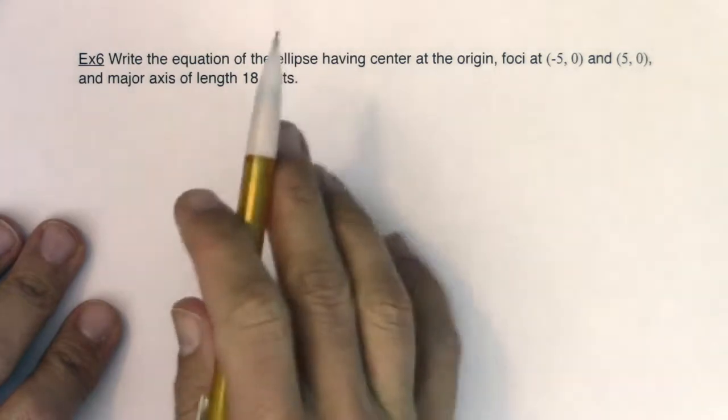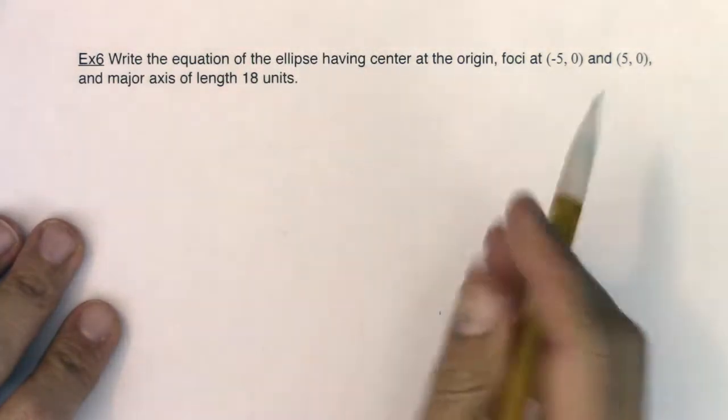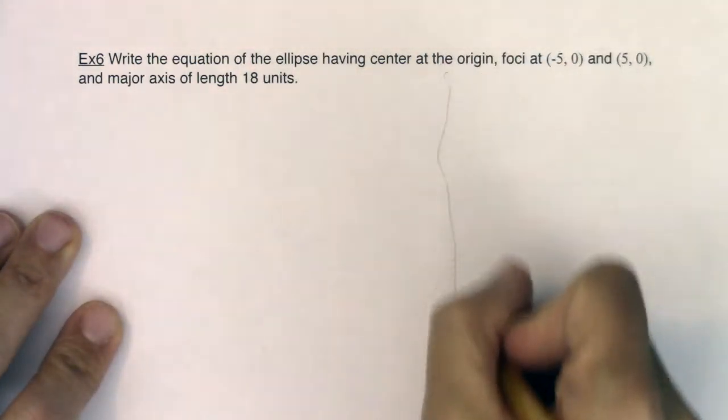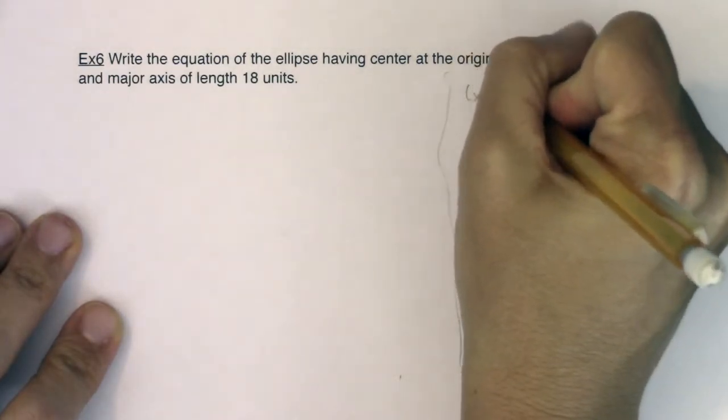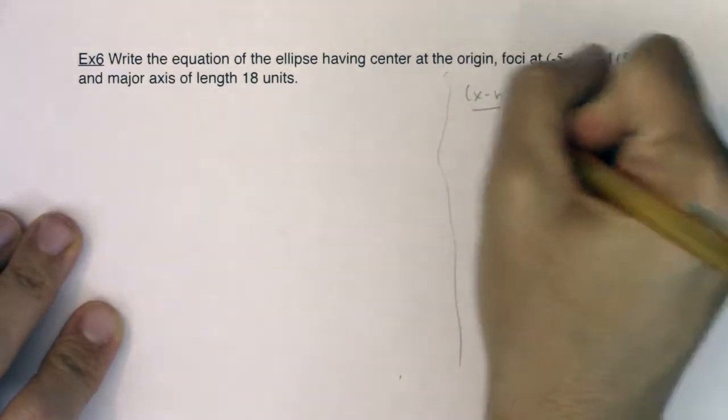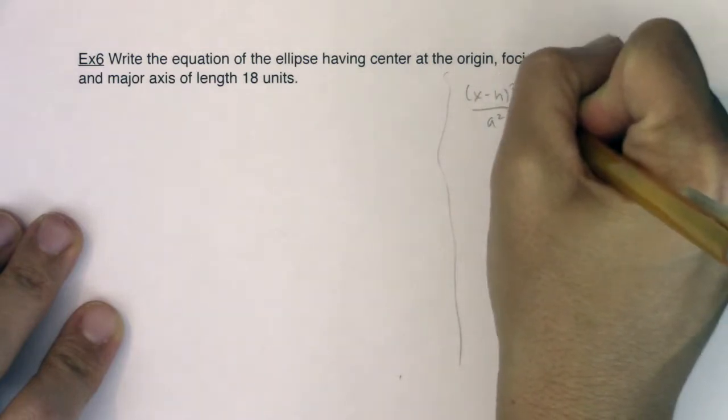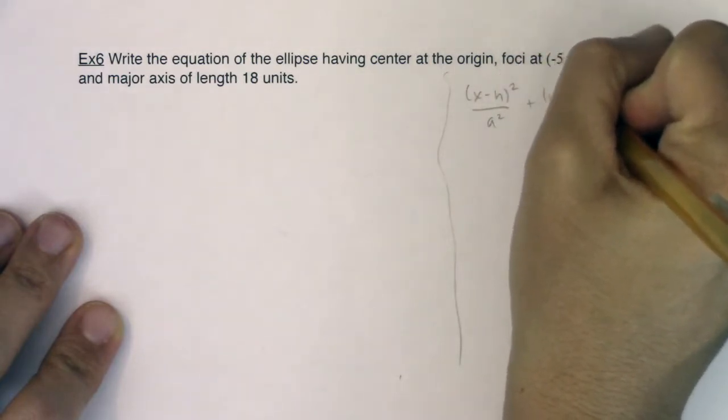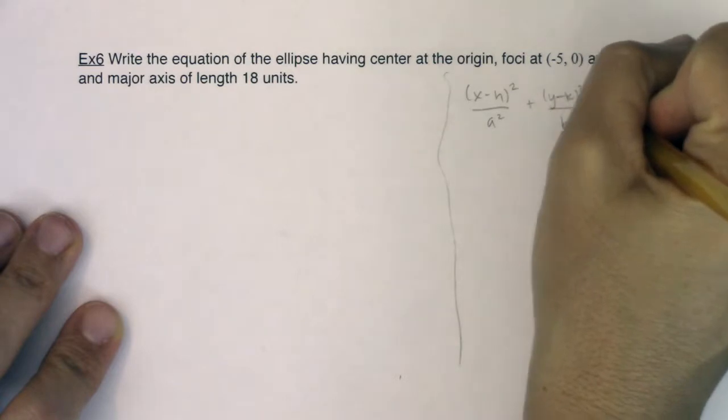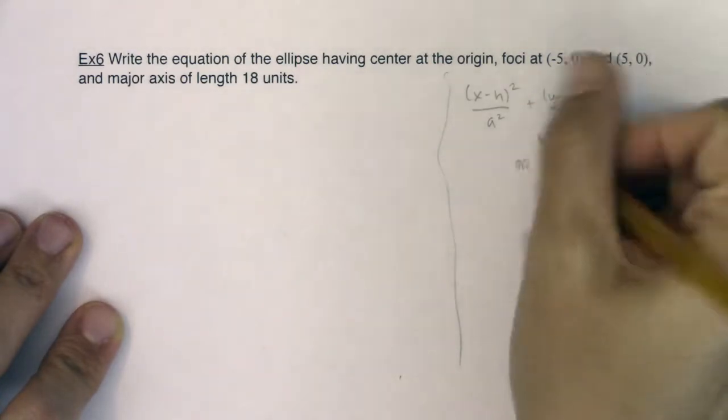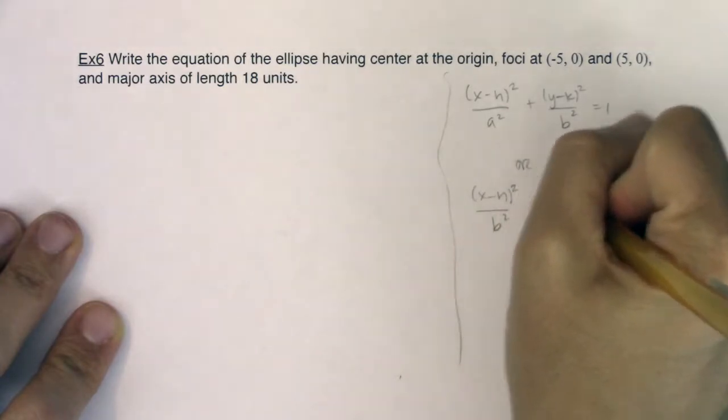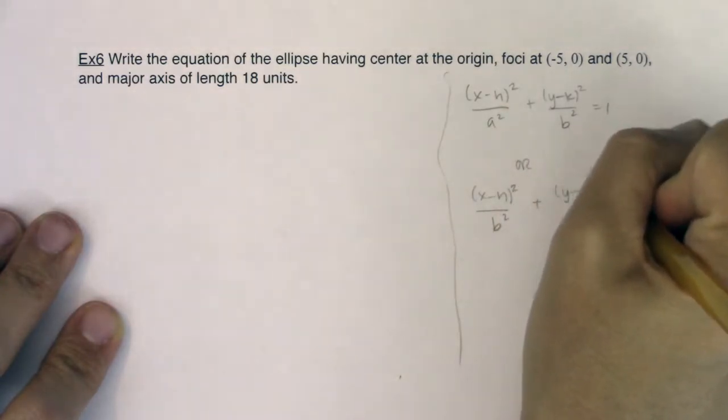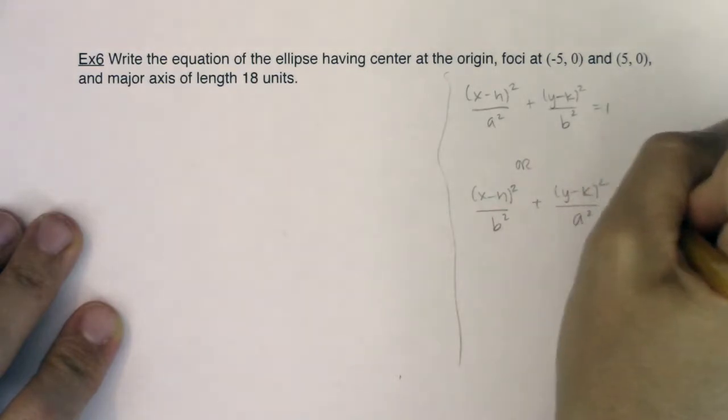Let's piece this together. I want to write the equation of an ellipse. So like last time, just like example 5, you have a couple of options. You're either going to have (x-h)²/a² + (y-k)²/b² = 1, or you're going to have (x-h)²/b² + (y-k)²/a² = 1.